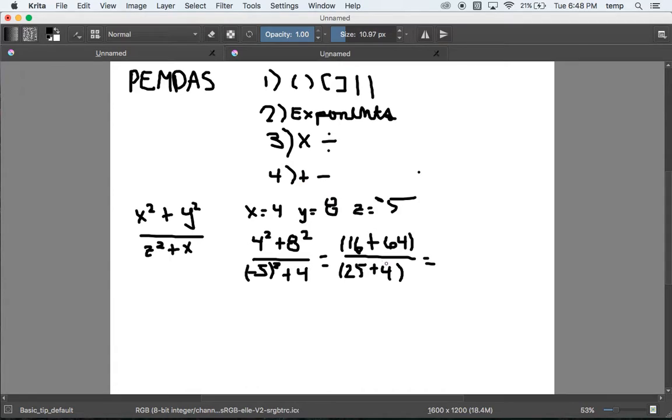We do our final step: addition and subtraction. We have 16 plus 64, and that is equal to 80. We have 25 plus 4, and that'll leave us with 29. So 80/29. Doesn't look like we can simplify this anymore - I believe 29 is a prime number.